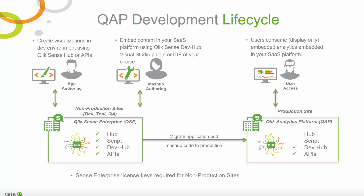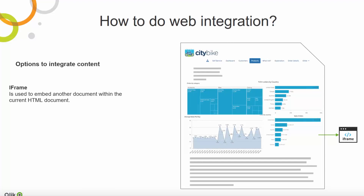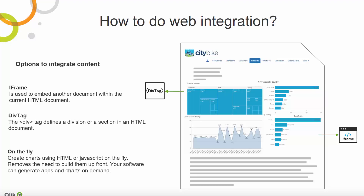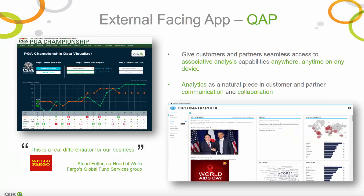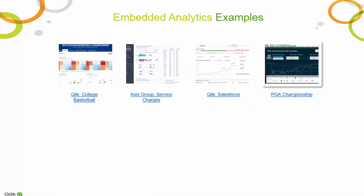Now that you understand the range of options you have for integration, let's talk about how to do this with a few approaches. You can integrate the Qlik Sense Hub using an iframe, or integrate a sheet or chart using an iframe or div. Finally, you always have the option to generate apps and charts on the fly using code in your SaaS platform — you don't have to prepare anything upfront, just generate the content as you need it. On this slide, you will see some example use cases where we used QAP to embed Qlik Sense in an external website, and we also have several examples of QAP embedded on third-party websites.